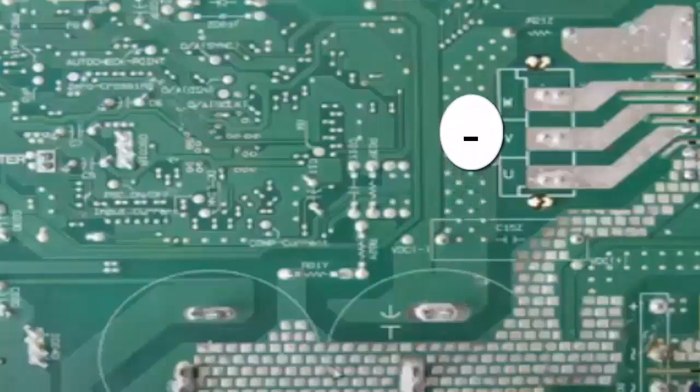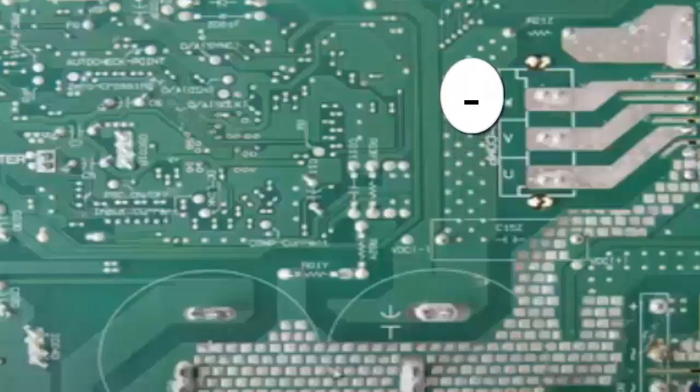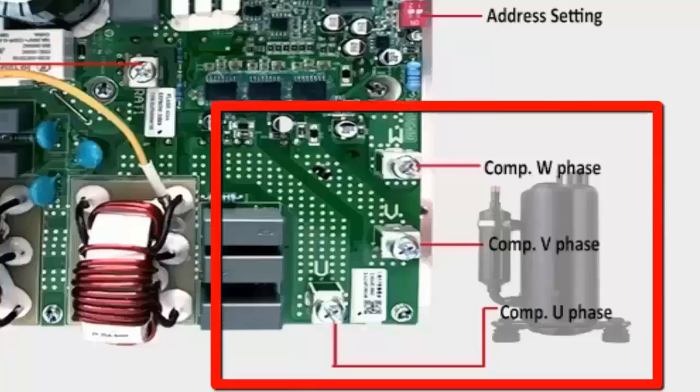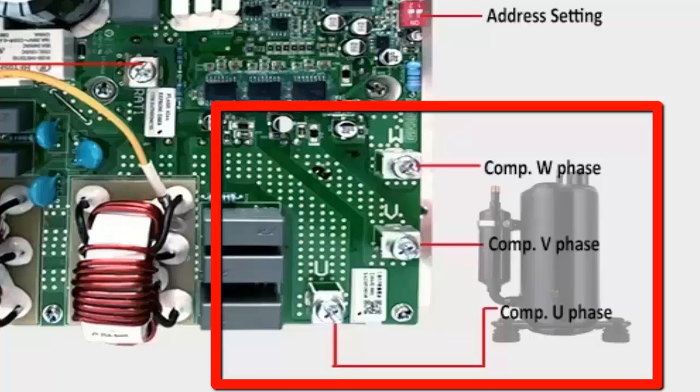5. Identify the output points UVW. These can be identified by following the tracks from the compressor connectors to the IPM Electronic Circuit.